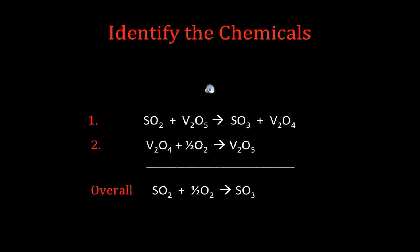So overall, SO2, reactant, O2, reactant, SO3, product. The V2O5 is a catalyst. It got used in step one, regenerated in step two. V2O4 is the intermediate, produced in step one, but used in step two. So that's our catalyst, and that's our intermediate.